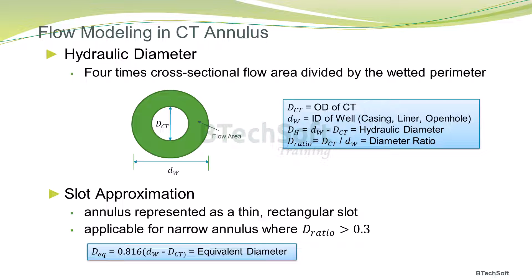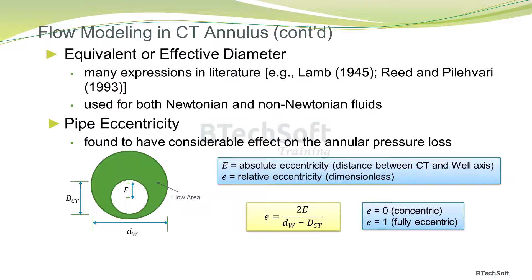Another approach to model the flow in the annulus is to represent the annulus as a thin rectangular slot. This is only applicable for a narrow annulus where the diameter ratio is greater than 0.3. Thus, for the slot flow approximation, the equivalent diameter for the annulus is 0.816 times the difference between the well bore ID and the coil tubing OD. There is also an equivalent or effective diameter that can be utilized to model flows in an annular geometry, and there are many expressions in the literature which are used for both Newtonian and non-Newtonian fluids.